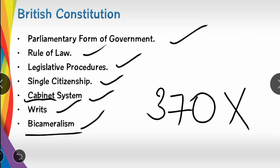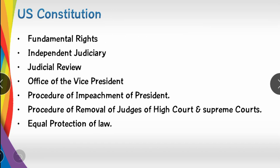Next is the US Constitution. From the US Constitution we take: fundamental rights, based on the natural bill of rights. Next is independent judiciary — the concept of judicial independence at every level. And from the US Constitution we also take judicial review.